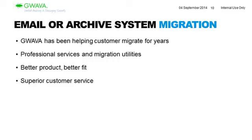Now that we've talked about Retain and how it gives you a better approach to archiving, you're probably thinking about how you can make the switch and how to migrate that data. We've been helping customers for years migrate their data. We've been able to integrate your current email system with the Retain archive — you can move email systems with Retain, pull over archive information, and there are professional services and migration utilities to help you find the best fit for your organization.